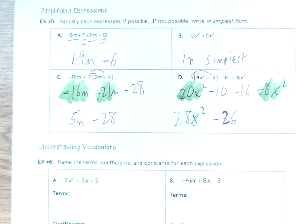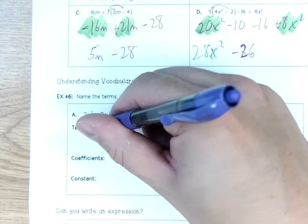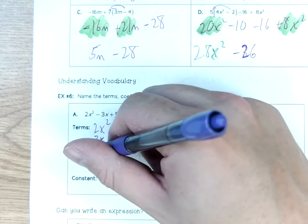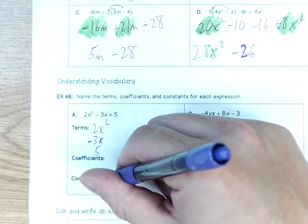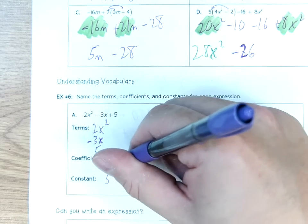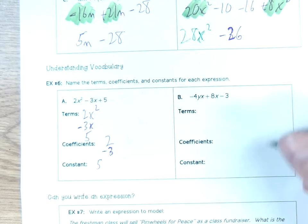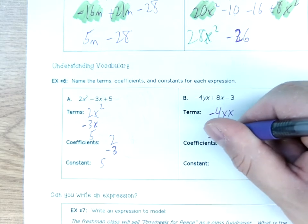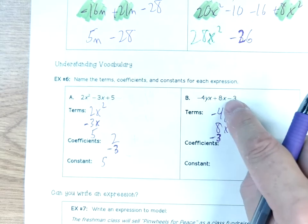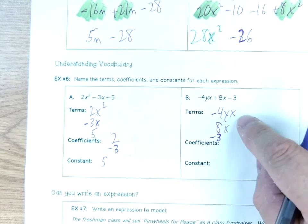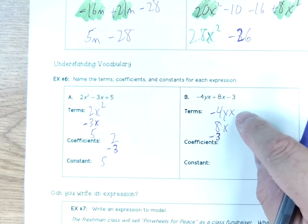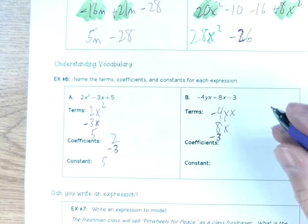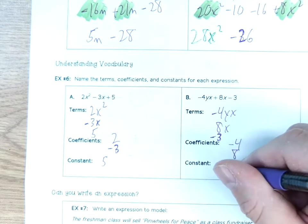What are my terms, coefficients, and constant for 2x² − 3x + 5? My terms are 2x², −3x, and 5. My constant is 5. My coefficients are 2 (in front of x²) and −3 (in front of x). For the expression −4yx + 8x − 3: terms are −4yx, 8x, and −3. Coefficients are −4 and 8. The constant is −3. Note that yx is a multivariable term with both y and x.